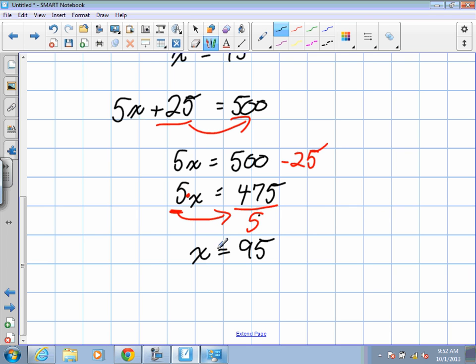Now we want to check our answer. In both cases we got 95, so it's probably right. We're going to plug it back in for the variable x. When we do this, we take our original equation: 5x plus 25 equals 500.